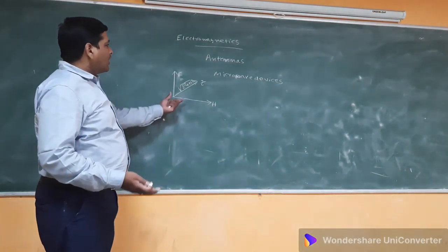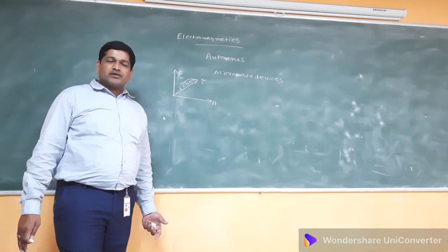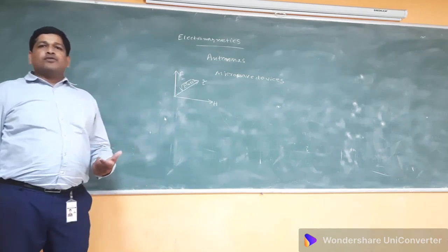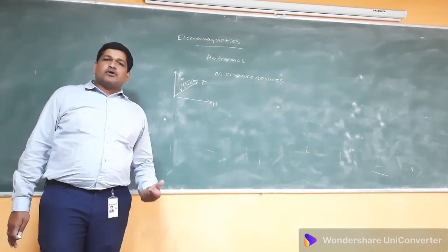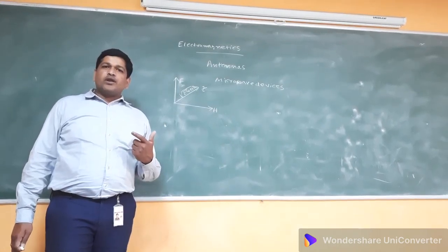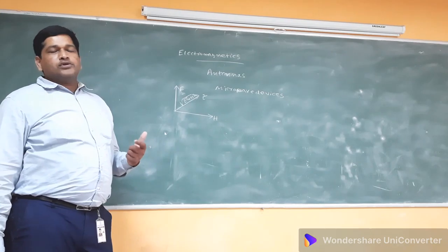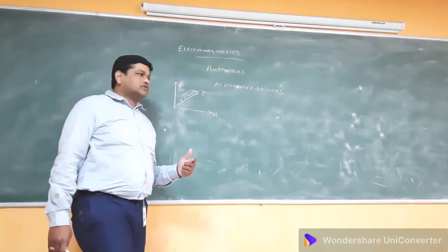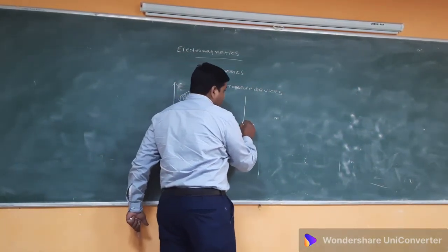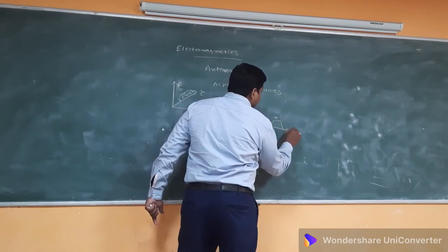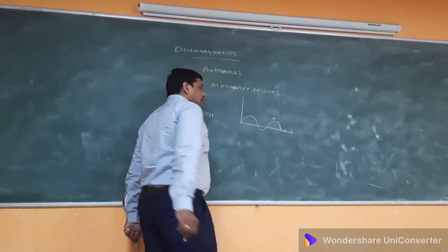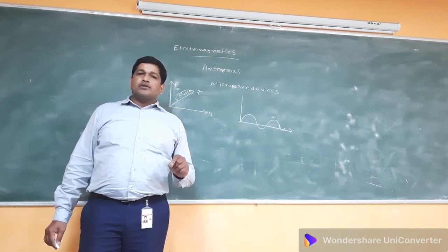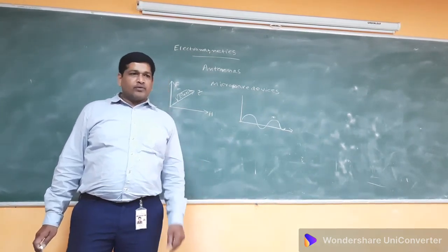These types of signals are called electromagnetic signals, and these electromagnetic signals are either time-variant fields or time-invariant fields. So electromagnetic fields are of two types: one is time-variant, and another one is time-invariant. When the electromagnetic signal is changing with respect to time, it is considered a time-varying field. When it is independent of the variation of time, it is called a time-invariant field.